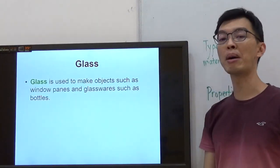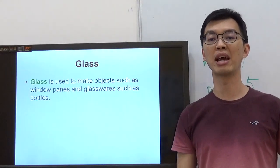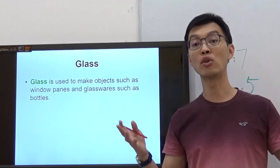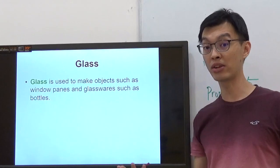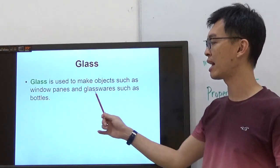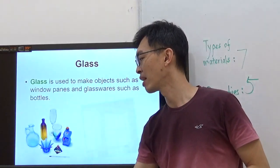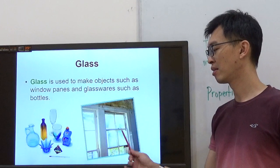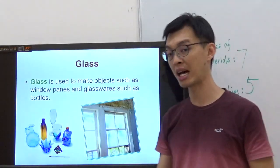So next, we're going to talk about glass. This is simple. I think you see glass practically everywhere, especially the window panes, meaning your kitchen windows, your living room windows. Glass is used to make objects such as window panes and glassware such as bottles. There you go, the window panes, the different kind of bottles, the glass bottles.